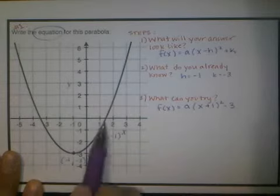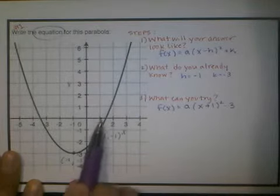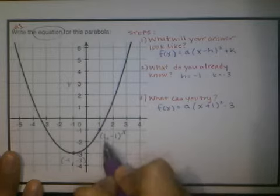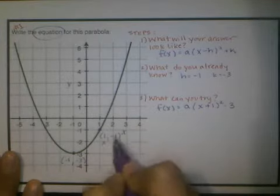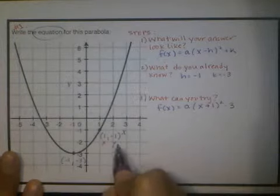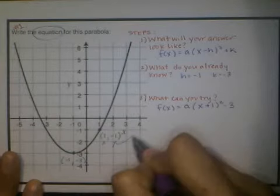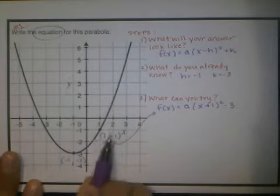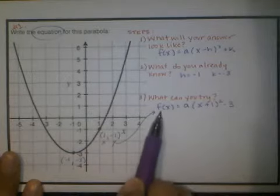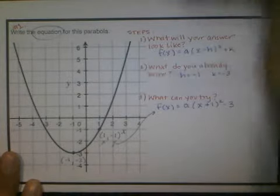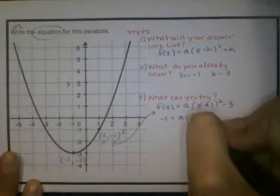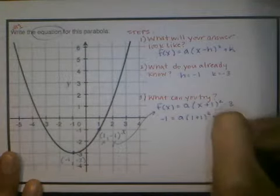If this point is on the graph, that means it's a solution. Not just a solution as in a point on the graph, but a solution to this equation. So I should be able to plug in this first 1 for x and this second -1 for y, and have the equation still work. Okay, but I don't see a y right away. That's okay. I remember that f(x) is really just another name for y. So next I'm going to plug in these two values for f(x) and for x.